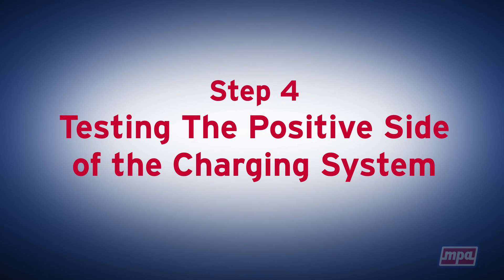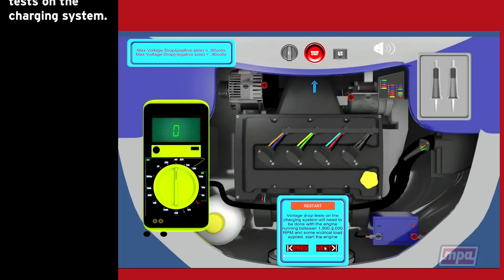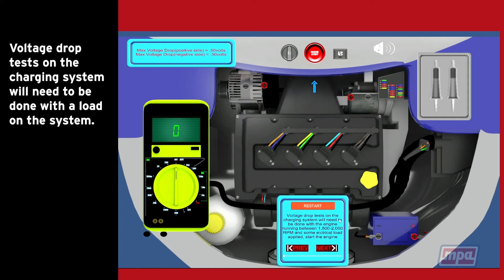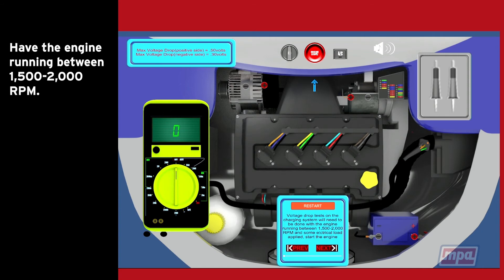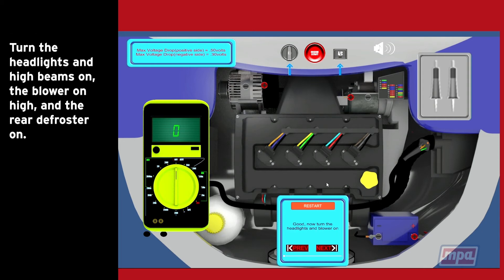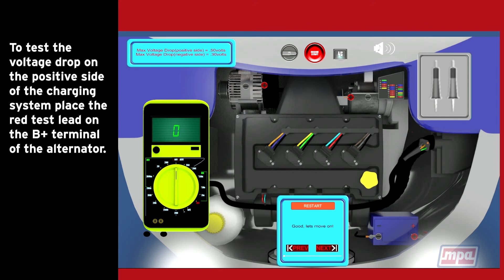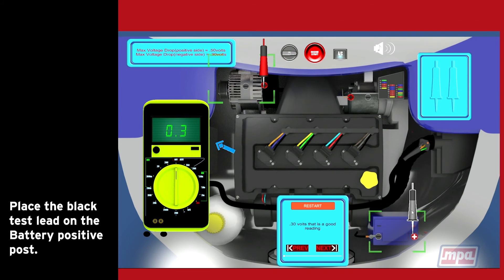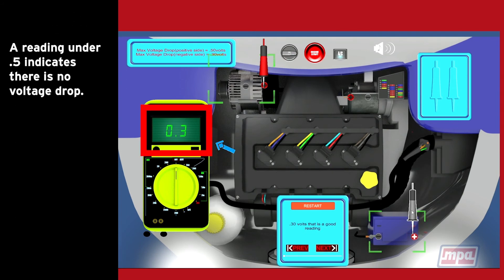Step 4: Testing the positive side of the charging system. Now let's perform voltage drop tests on the charging system. Voltage drop tests on the charging system will need to be done with a load on the system. Have the engine running between 1500 to 2000 RPM. Turn the headlights and high beams on. Put the blower on high and the rear defroster on. To test the voltage drop on the positive side of the charging system, place the red test lead on the B plus terminal of the alternator. Place the black test lead on the battery positive post. A reading under 0.5 indicates there is no voltage drop.